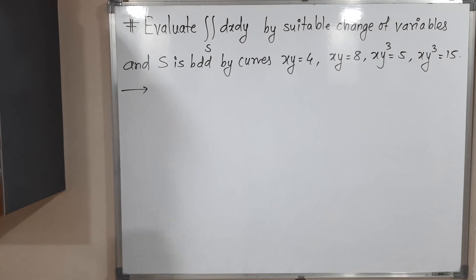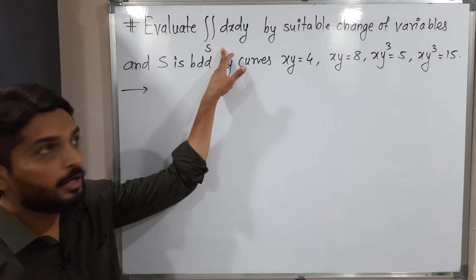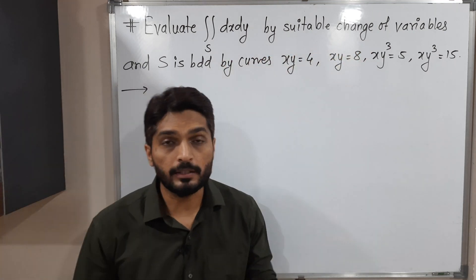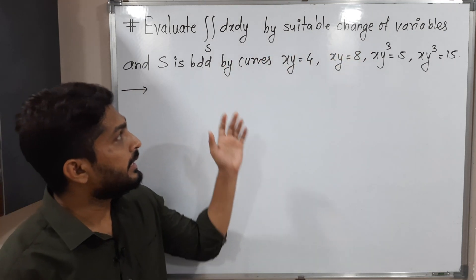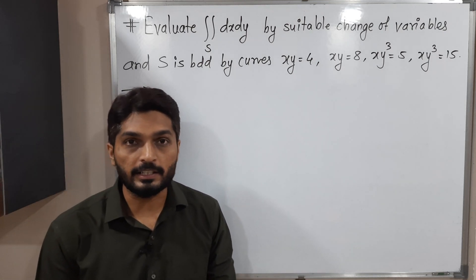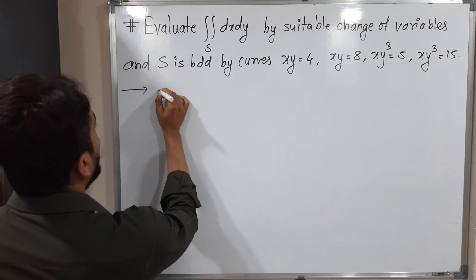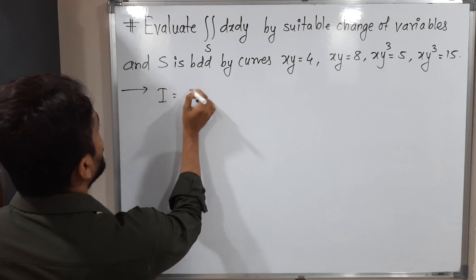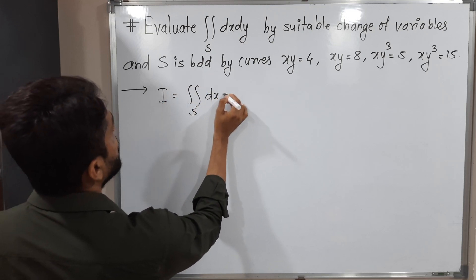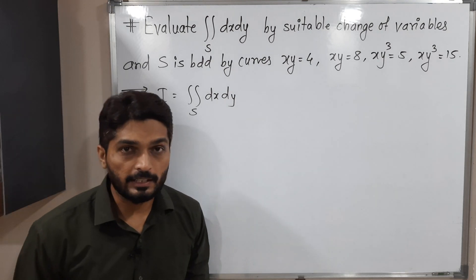In this video we are going to find the value of a double integration with the help of a suitable change of variables, where the region is bounded by four different curves. So let us write the given integral first. I is equal to double integration over S dx dy.